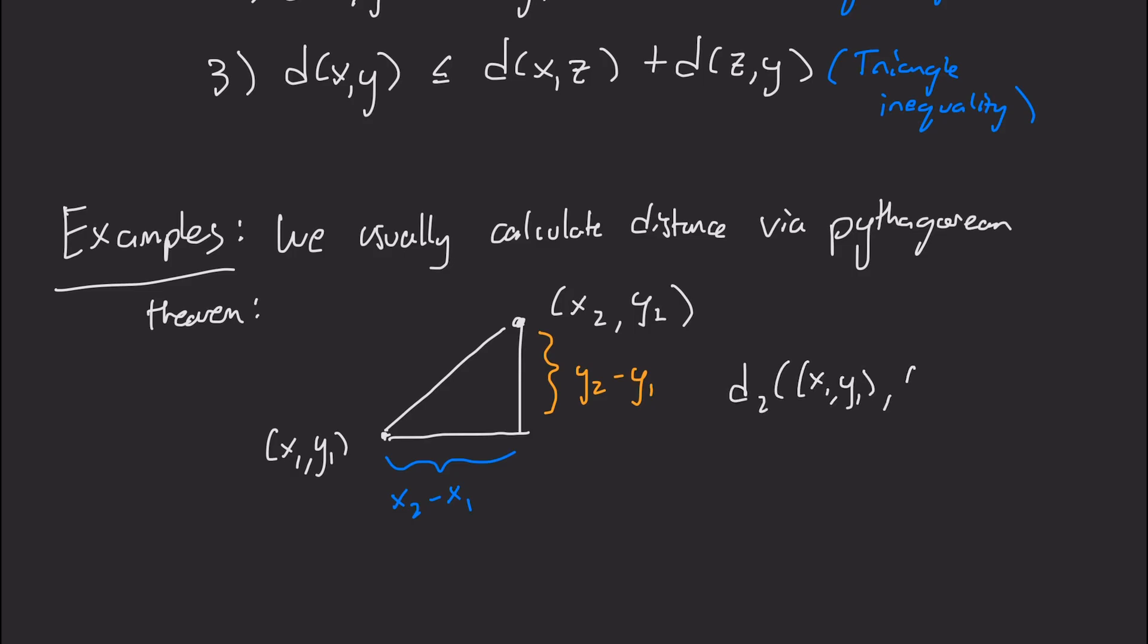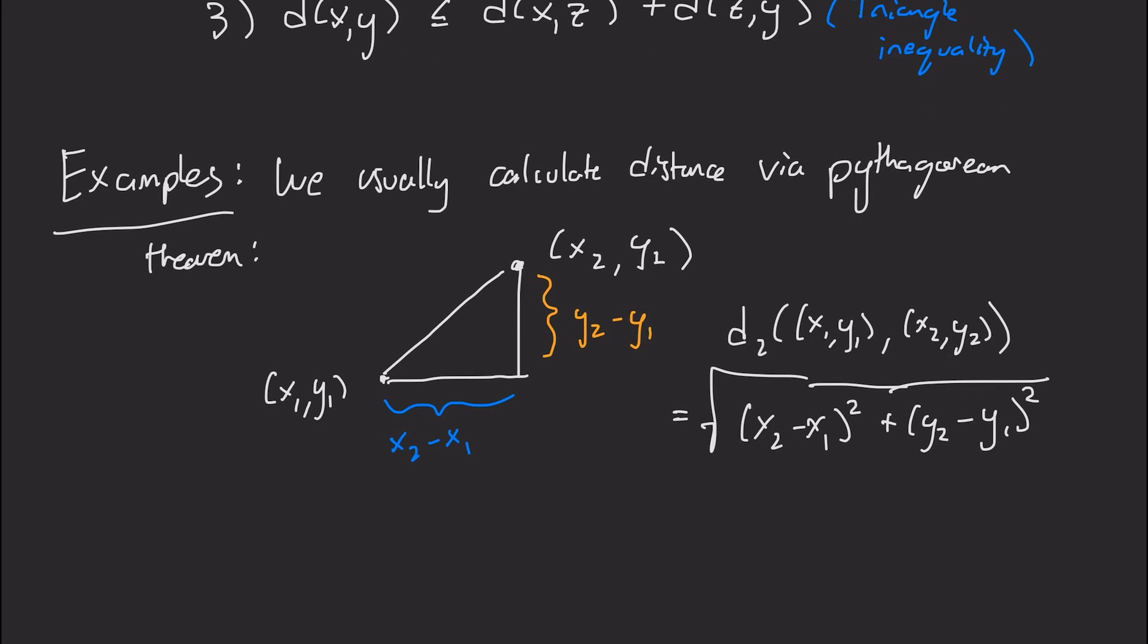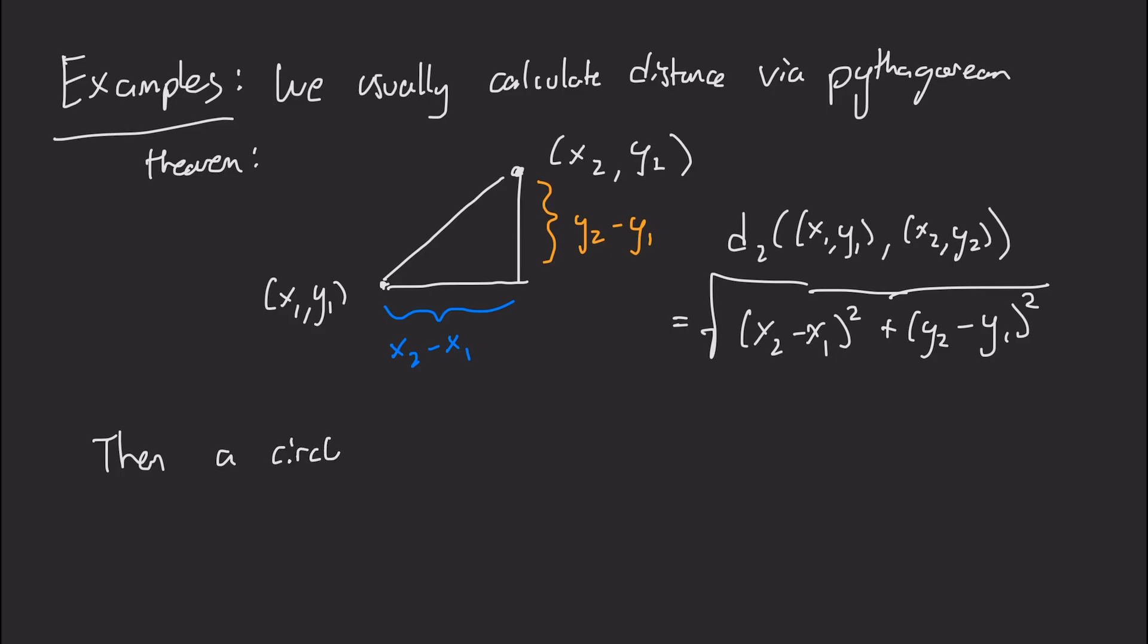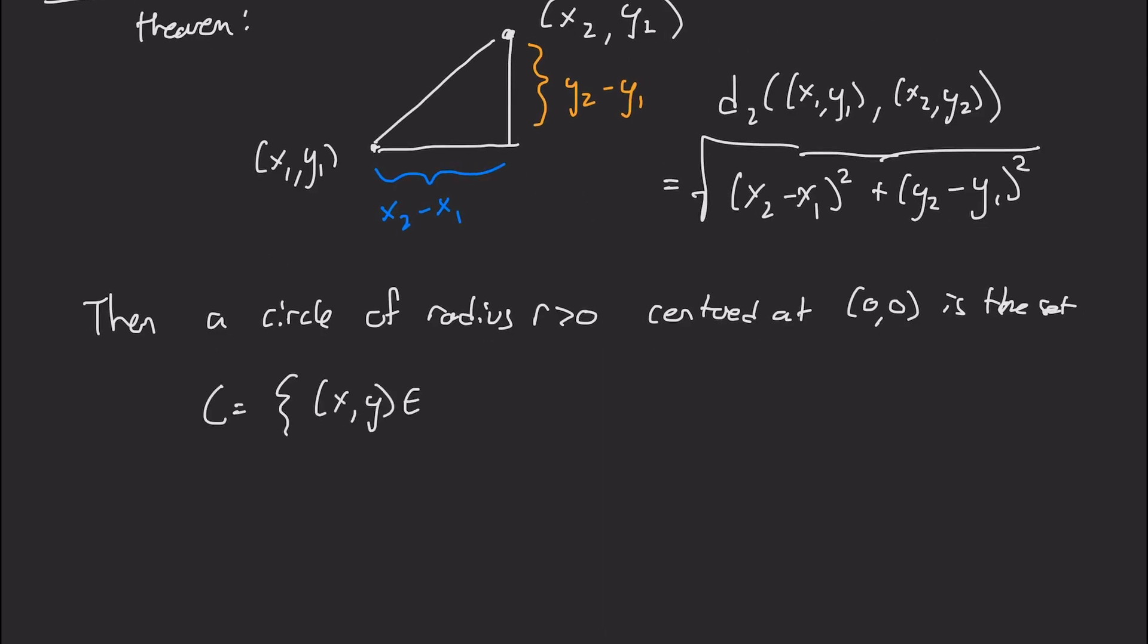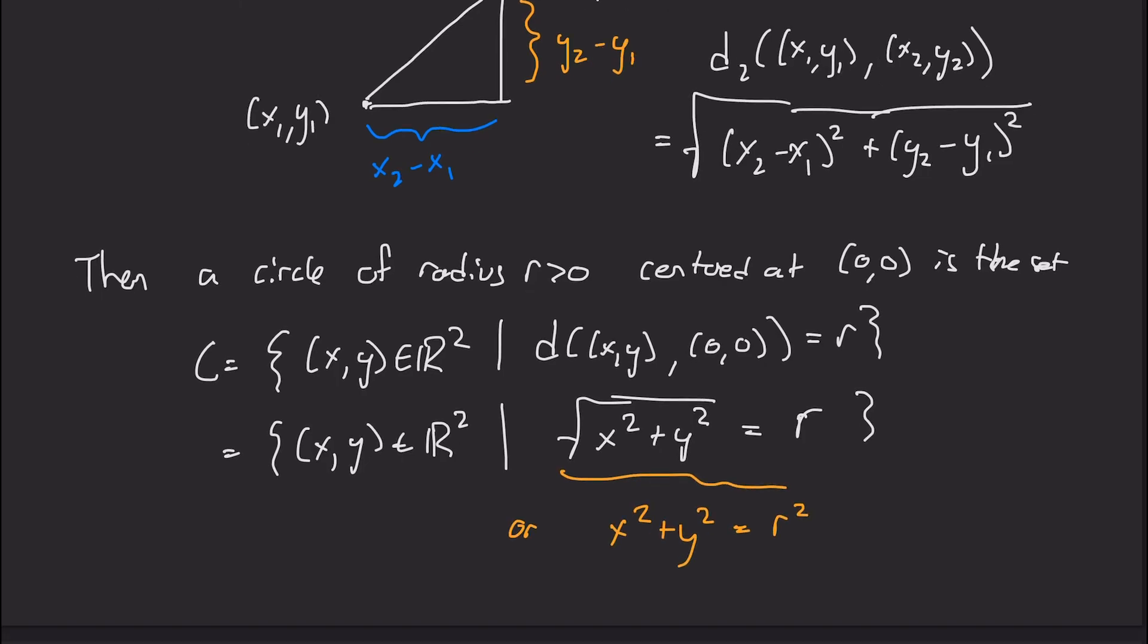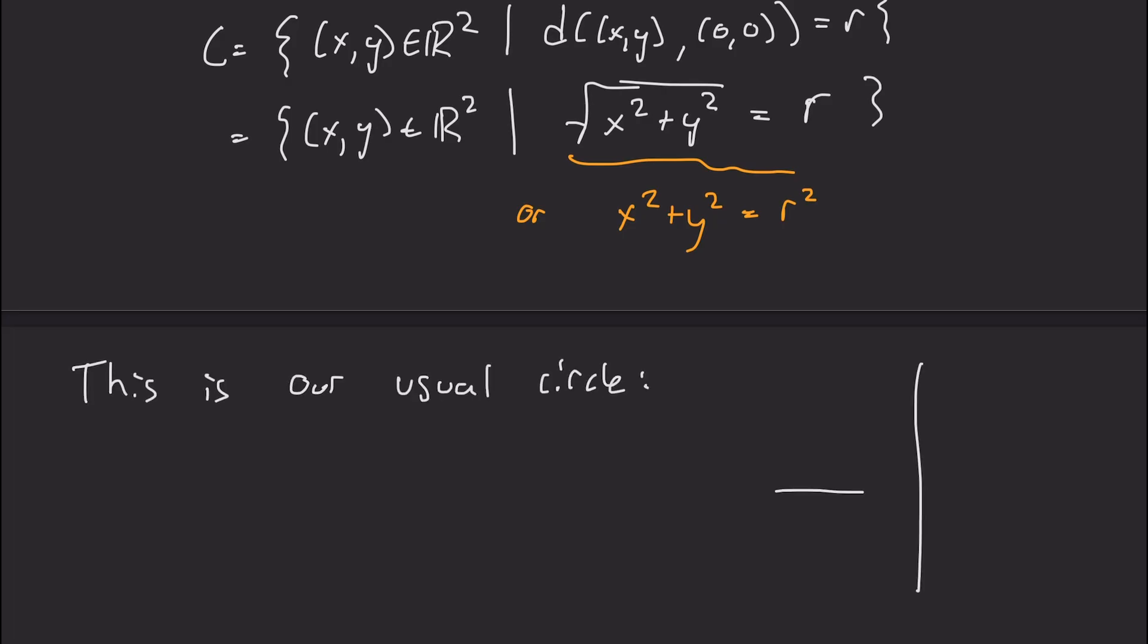So an easy application of the Pythagorean theorem says that the distance, and I'm going to give it a d subscript 2, for reasons that you'll see soon, between those two points, is going to be the square root of x2 minus x1 squared plus y2 minus y1 squared. With this distance, we can define a circle of radius r centered at 0, 0, to be the set of all xy, such that the distance between xy to 0, 0 is r, or that's the same thing as the square root of x squared plus y squared is r, or we can rewrite that as x squared plus y squared equals r squared. So this is our usual circle that you would expect.